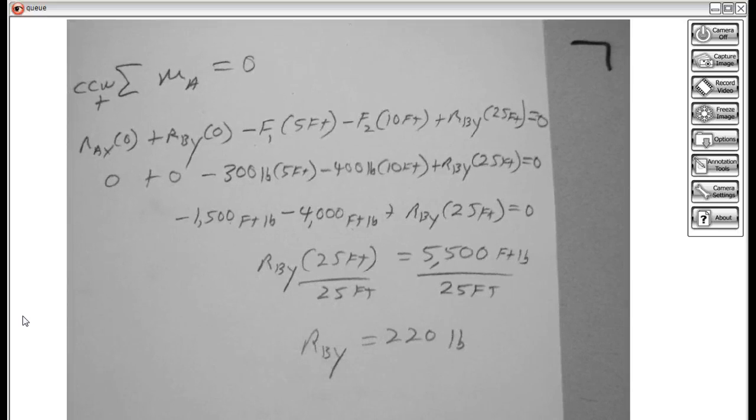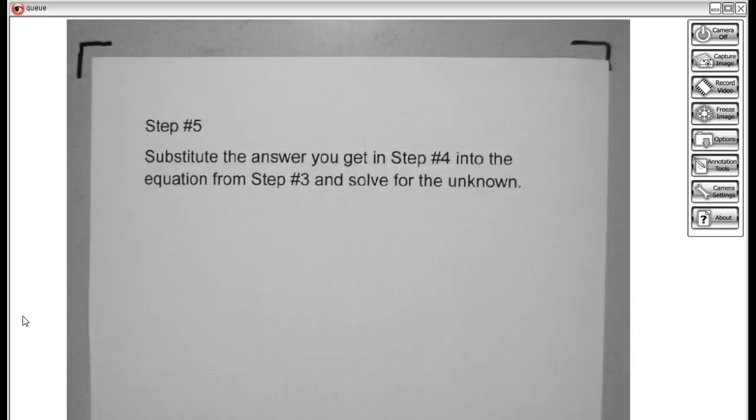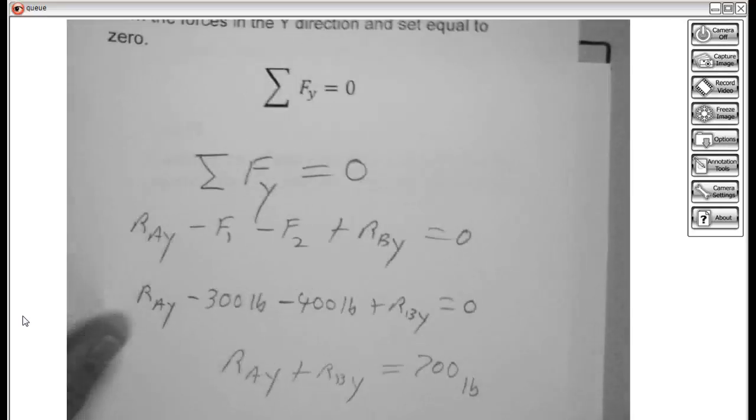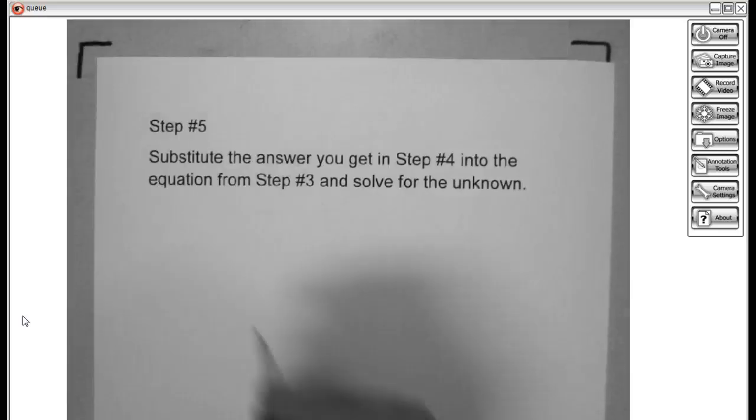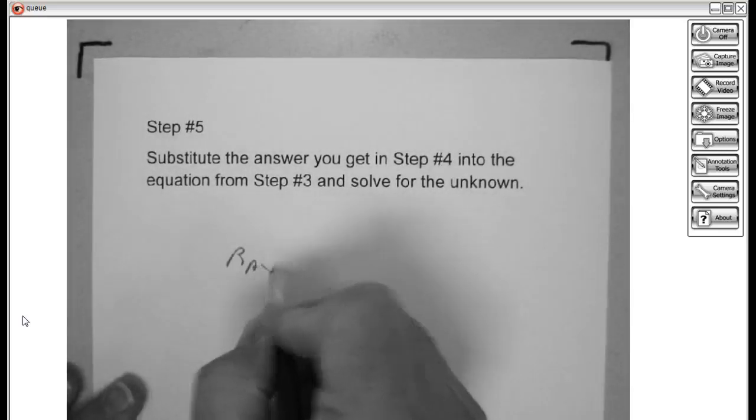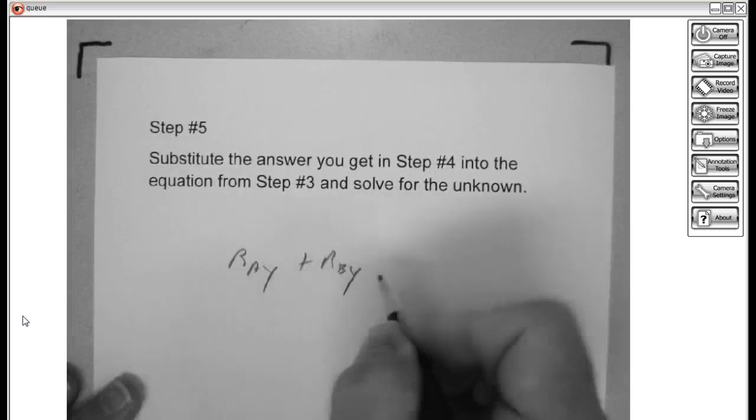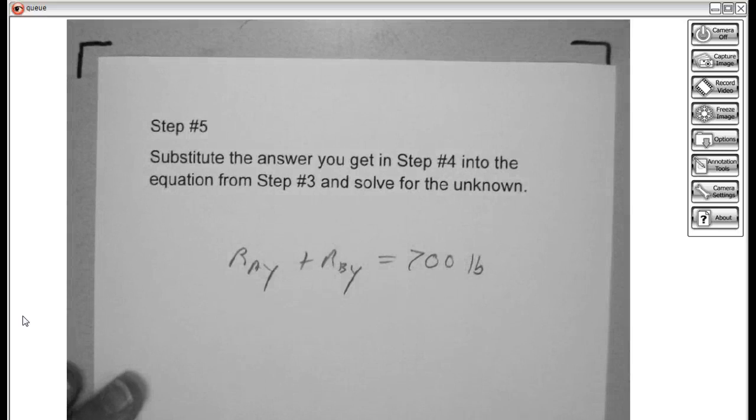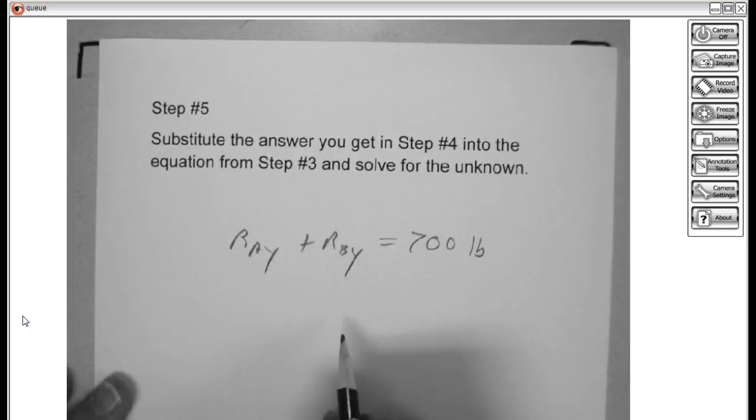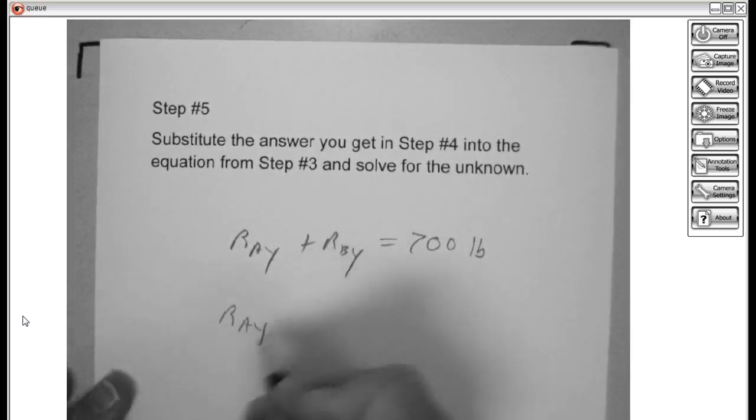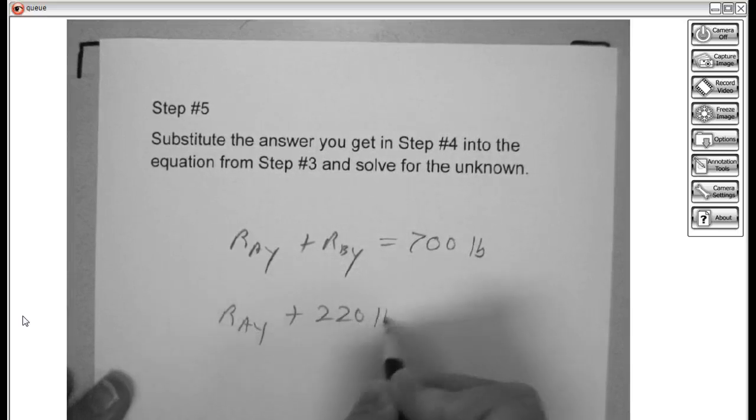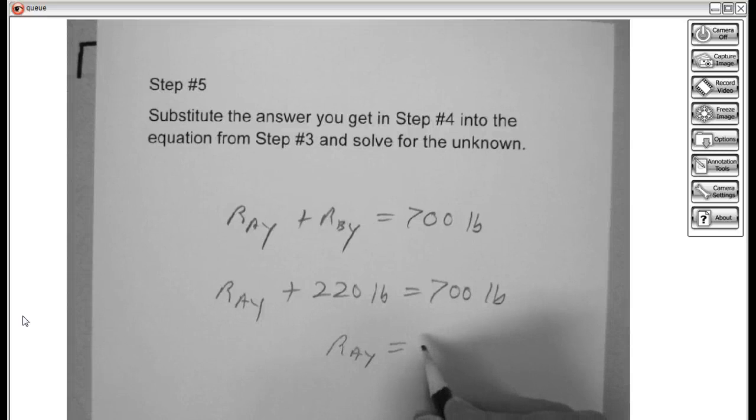One more step. Looking at the equation from 3. If you'll remember step 3 here, we came up with that equation. RAY plus RBY equals 700 pounds. Going ahead and plugging what we just found in step 4, RAY plus 220 pounds equals 700 pounds. Solving this, RAY equals 480 pounds.